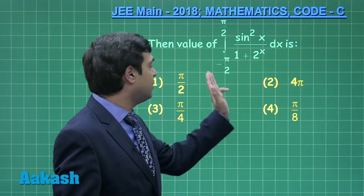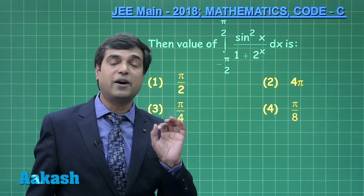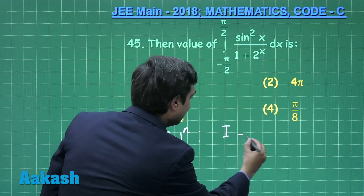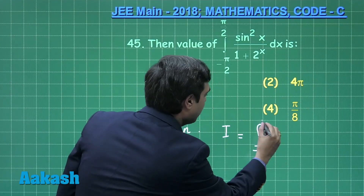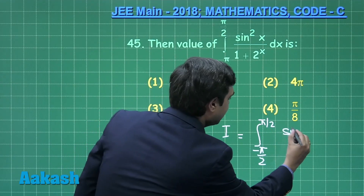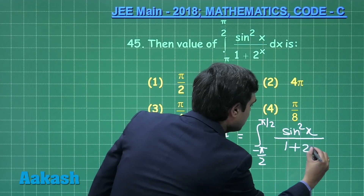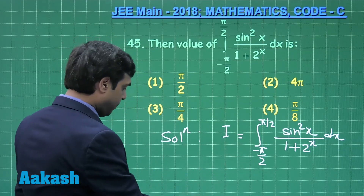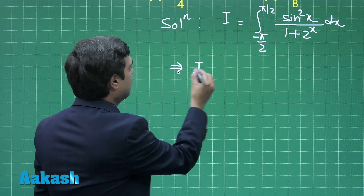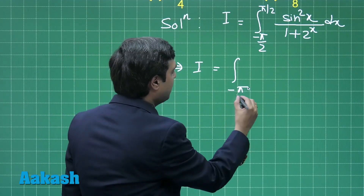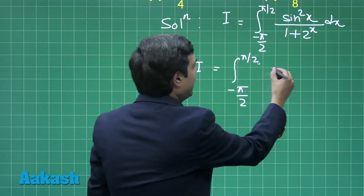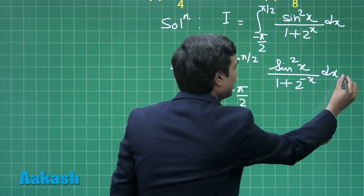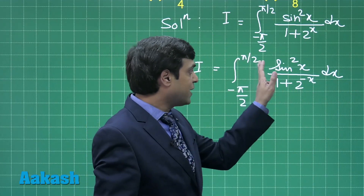The value of the integral from minus π/2 to π/2 of sin²x divided by 1 plus 2^x dx. Applying the f(a+b−x) property, I becomes the integral from minus π/2 to π/2 of sin²x divided by 1 plus 2^(−x) dx, which can be rewritten as 2^x divided by 2^x plus 1.